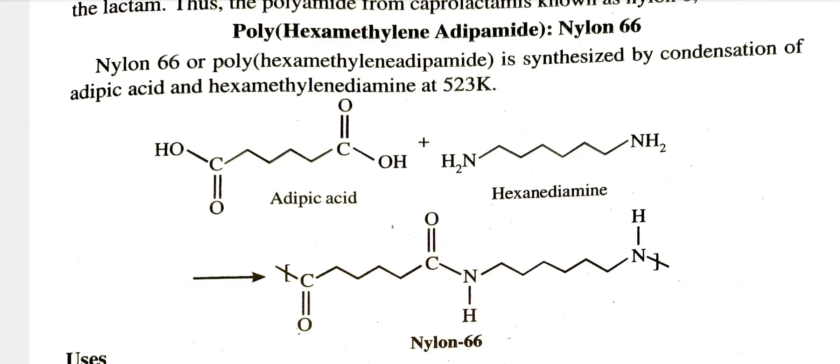Nylon 66 is known as polyhexamethylene adipamide. This is called Nylon 66 and it is a polyamide — specifically an aliphatic polyamide. We have two types of polyamides: aliphatic polyamide and aromatic polyamide.